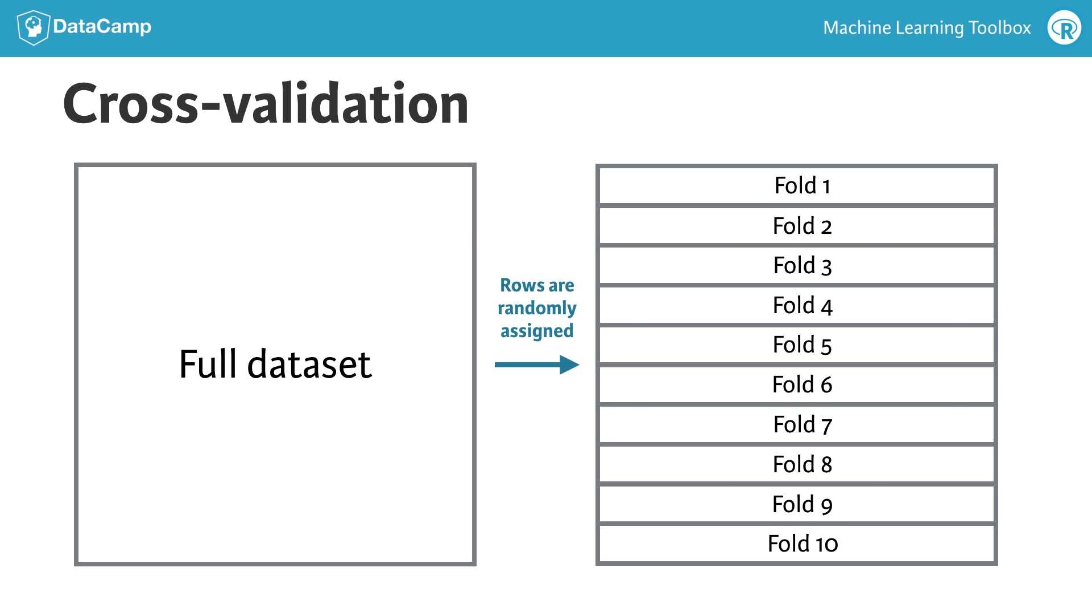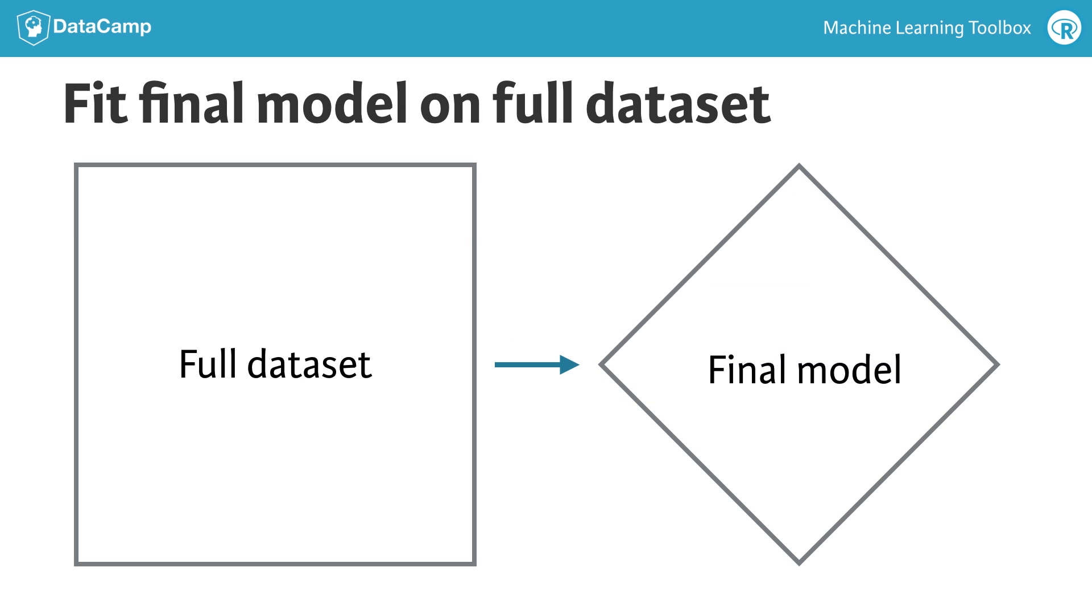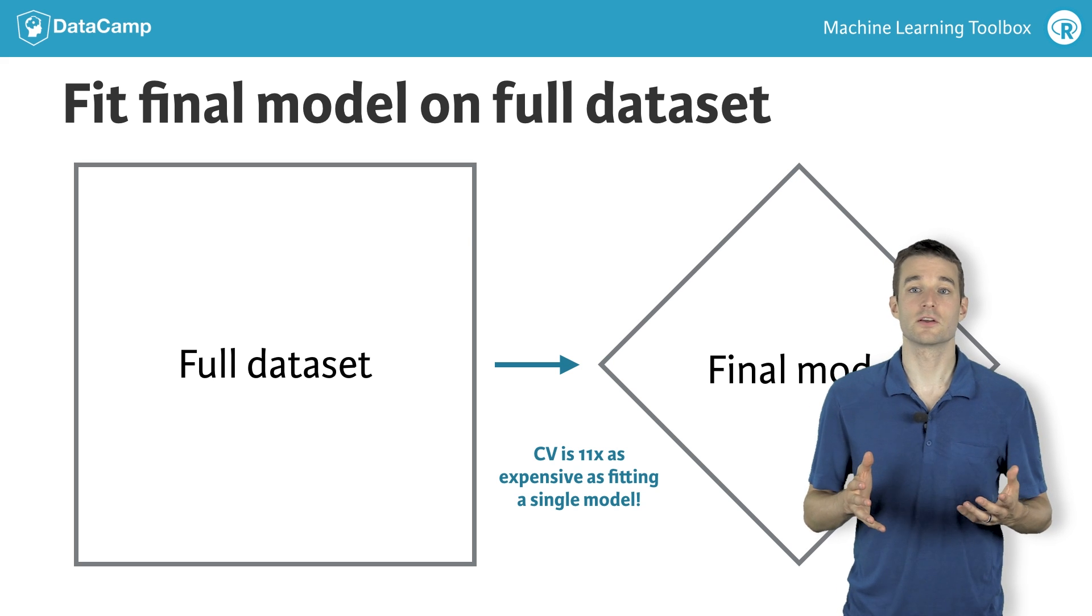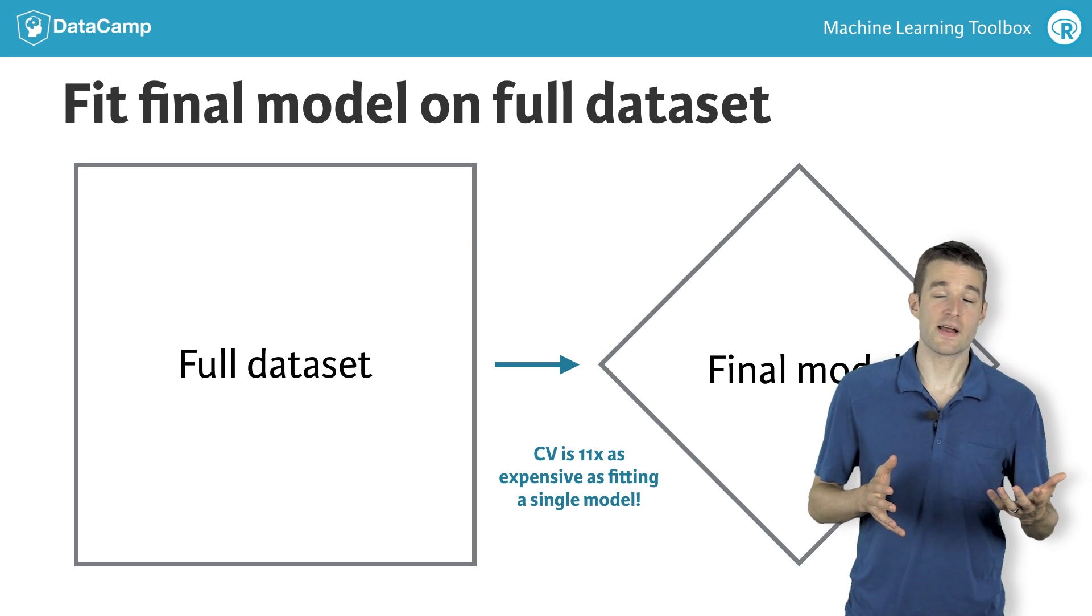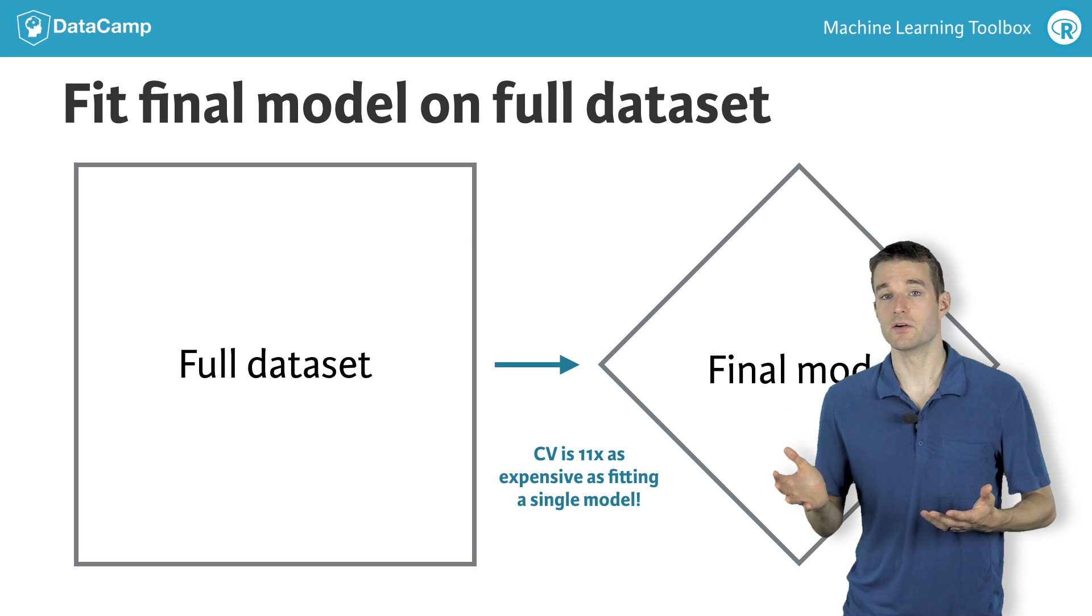Once you know this, you refit your model on the full training dataset so as to fully exploit the information in that dataset. This, by definition, makes cross-validation very expensive. It inherently takes 11 times as long as fitting a single model: 10 cross-validation models plus the final model.